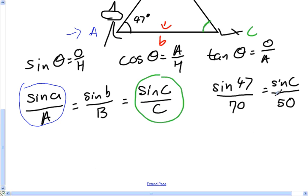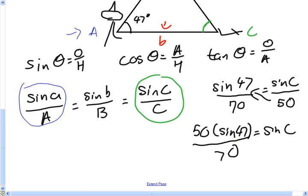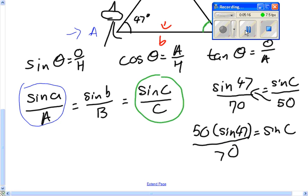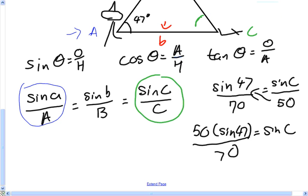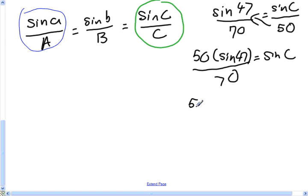So let's try to solve this. I'm going to bring 50 over to this side. So my equation is going to say Sign C is equal to 50 times Sign 47 over 70. We know that Sign 47, well, we don't know, but it calculated in our calculator. Sign 47 is equal to 0.731.